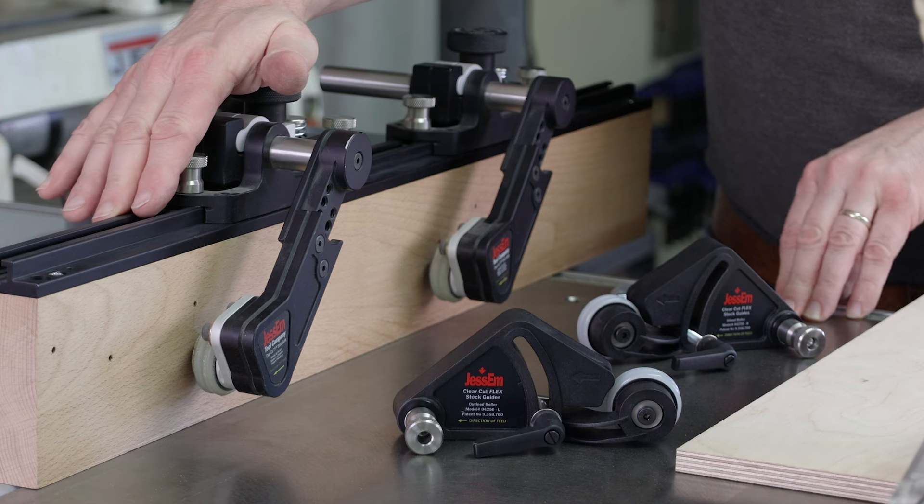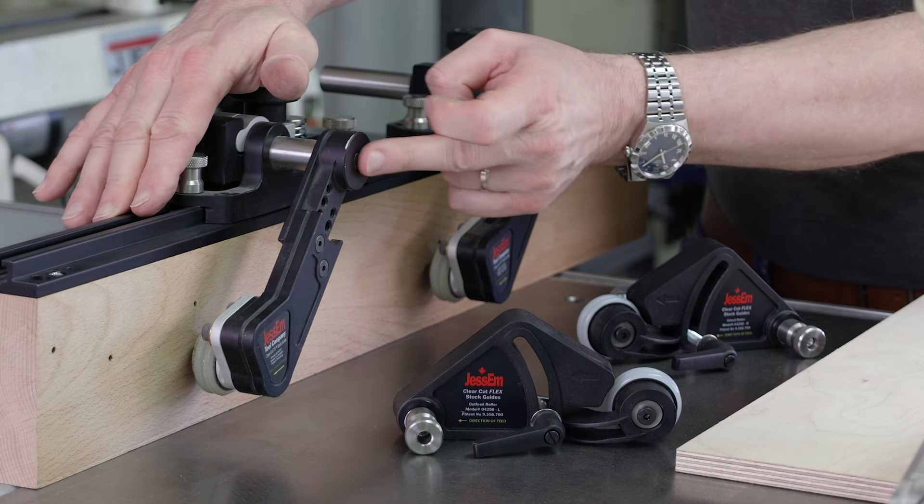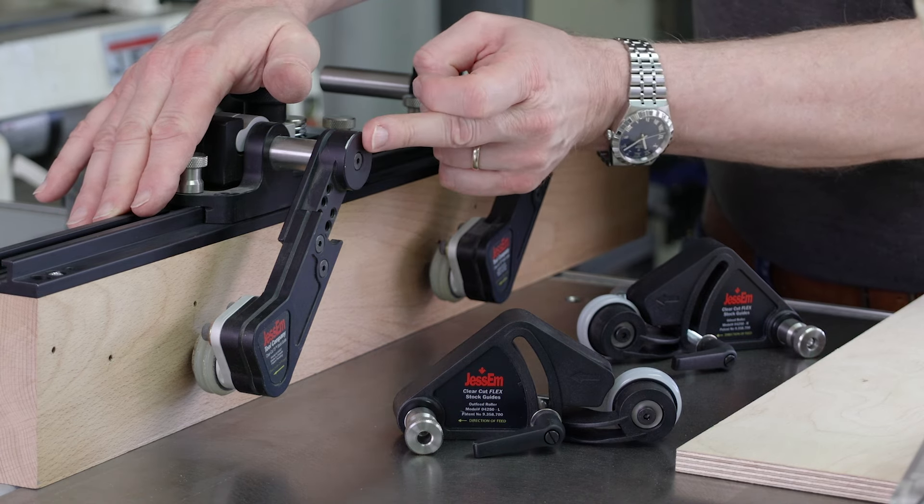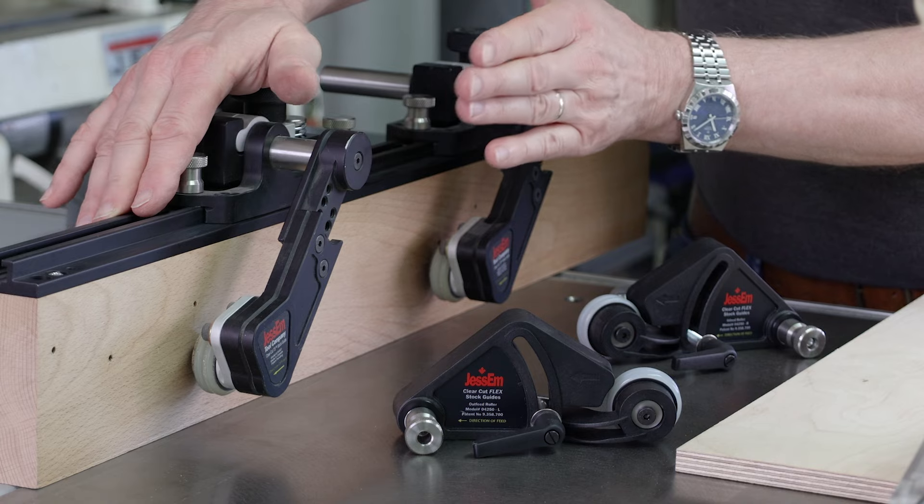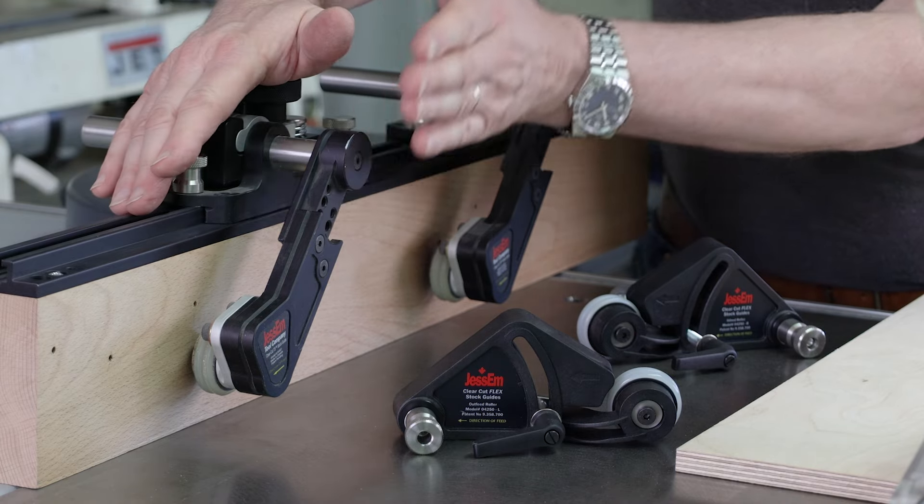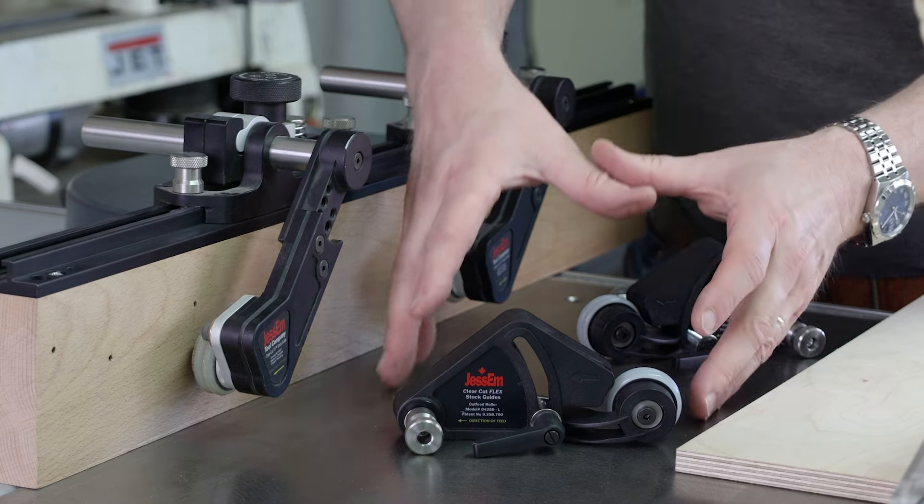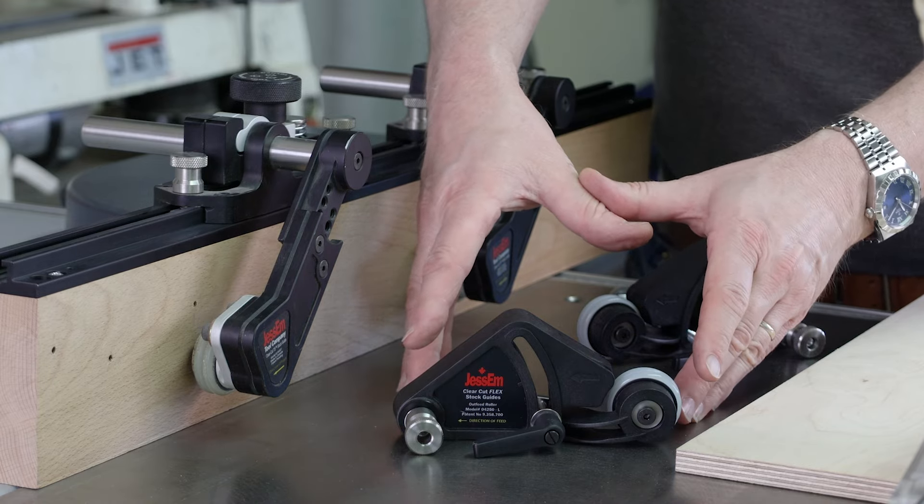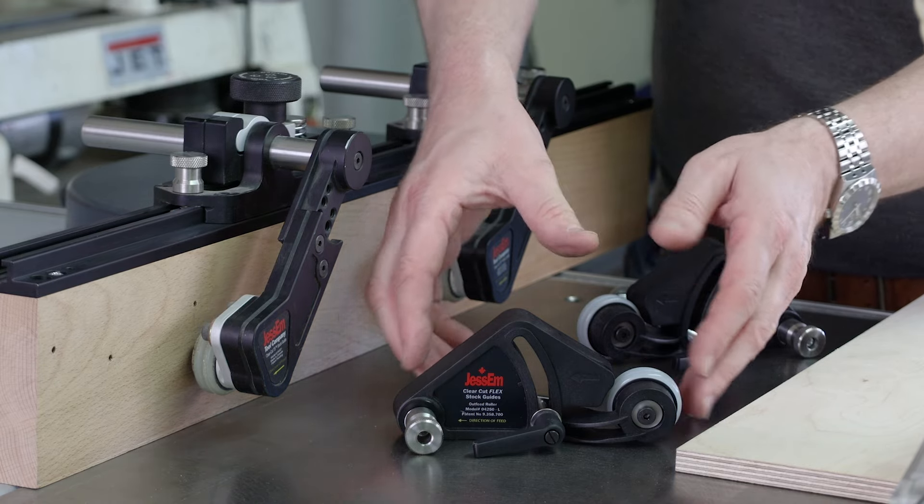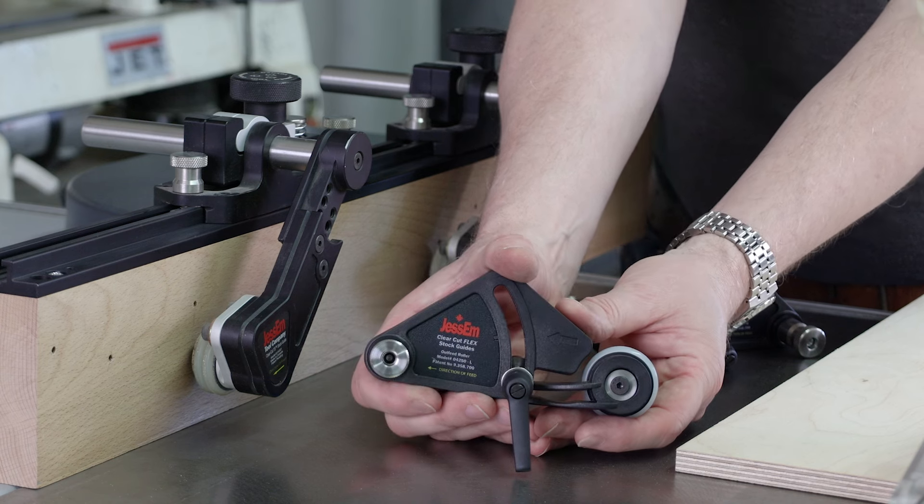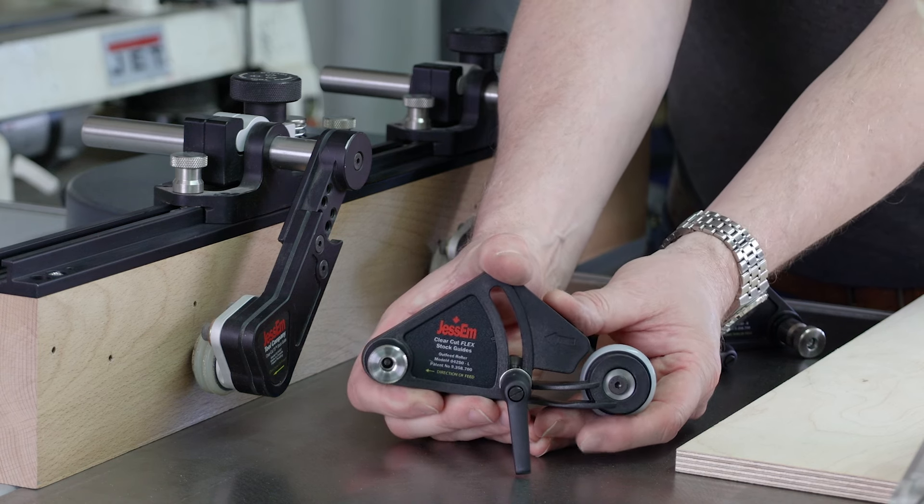For my big Felder table saw I use these JessEm Clear-Cut Stock Guides for the table saw. It's a big powerful machine. We need this bulk and heaviness and strength of this setup. If I were using a smaller contractor's or table saw, less powerful machine, then I'd more likely use these flex stock guides.